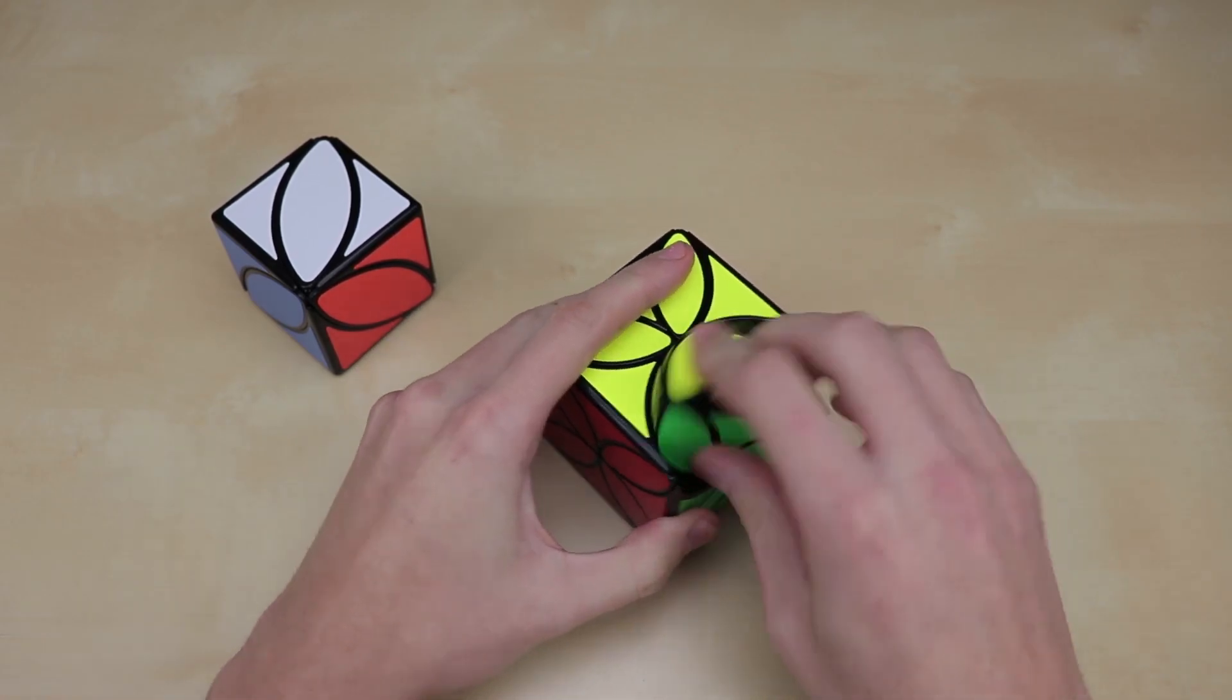And I guess if you were to speed solve this puzzle, this would be the one that you would want to use, because it's pretty darn good. Anyway, let's go ahead and get on to the pentacle cube. So, right up here, we have it in its box.